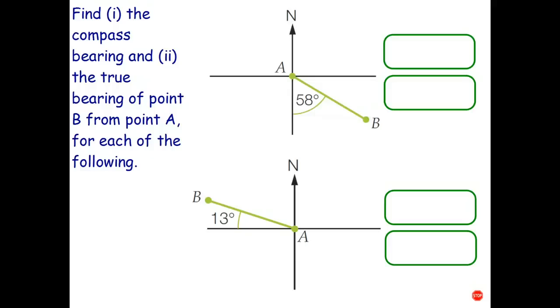Let's see how you went. For the first one, the compass bearing is going to be south, 58 degrees east. So, from the south, we're going in a direction 58 degrees towards the east. Now, to work out the true bearing, we need to work out what this angle is. And that's going to be 180 take away 58, which is going to be 100. If I take away 60, I get 120. So, I reckon that's going to be 122. So, the true bearing is 122.